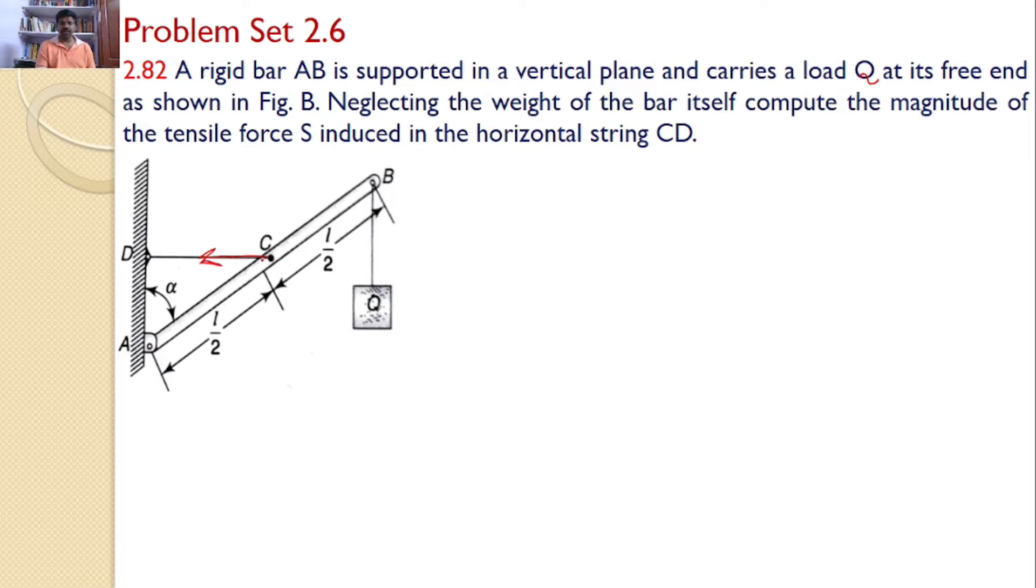At A, since it is a hinged support, the hinged support will introduce two reactions: one is the horizontal reaction and the vertical reaction. Let us assume initially the directions of both reactions are like this. It is our rigid bar AB. The length is L by 2 and L by 2, which makes an angle alpha with the vertical as given in the problem.